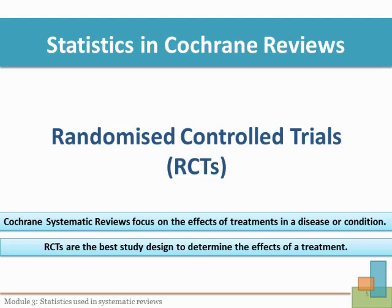As indicated in an earlier module, Cochrane systematic reviews focus on the effects of treatments in a disease or condition — for example, the effects of school feeding programs in children. One of the best study designs to determine the effects of a treatment is the randomized controlled trial.